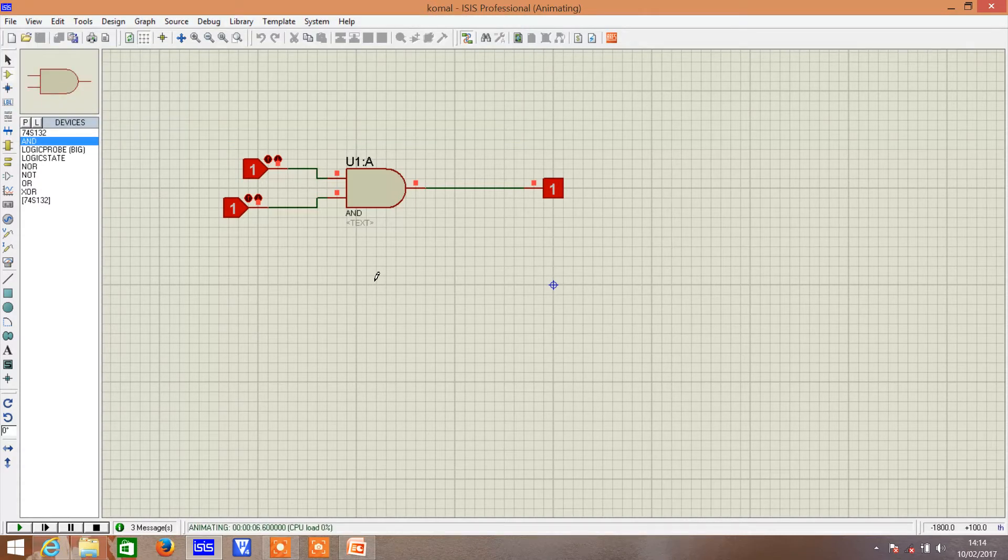Now, we change the input. If we change any input to 0, then we get output 0. Similarly, if we give both inputs 0, then we get output 0. And similarly, for all gates, we can simulate and check the output in this way.